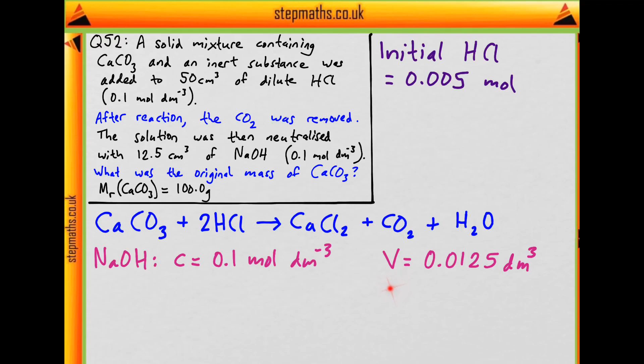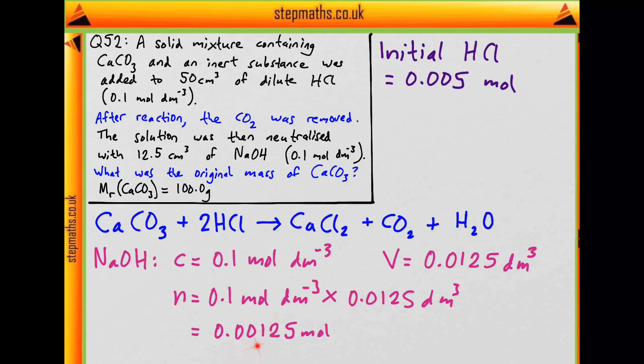Why don't we work out the number of moles for this as well? Putting the numbers in gives 0.1 moles per dm³ times 0.0125 dm³. We're just dividing this by 10, and that comes out as 0.00125 moles of sodium hydroxide required to neutralise the hydrochloric acid.